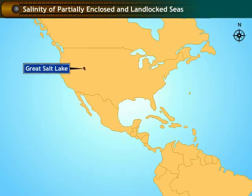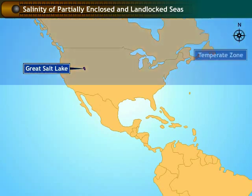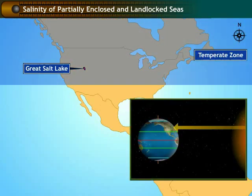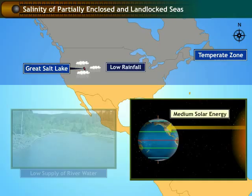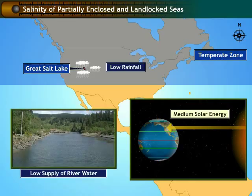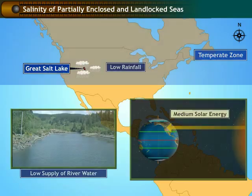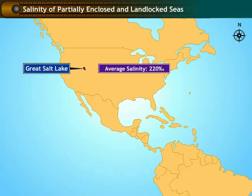The Great Salt Lake is located in the temperate region. The sunlight reaching this region is medium. The rainfall around this region is low, with hardly any river supplying fresh water to this lake. Hence, the average salinity of the Great Salt Lake is 220 parts per thousand.